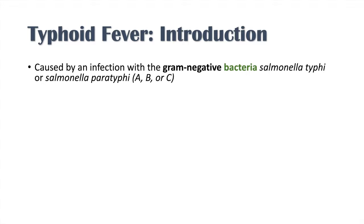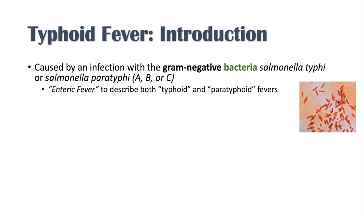Typhoid fever is caused by an infection with a gram-negative bacteria, Salmonella enterica serovar typhi, or simply Salmonella typhi, or a related bacteria, Salmonella paratyphi, which has different subtypes A, B, or C. Both bacteria cause slightly different clinical presentations, but we generally call infections by both of these typhoid fever. There's also the term enteric fever, which describes both typhoid and paratyphoid fever, so we can use typhoid fever or enteric fever interchangeably.